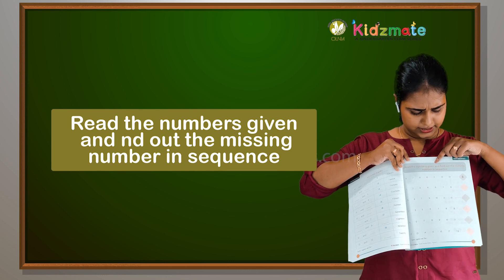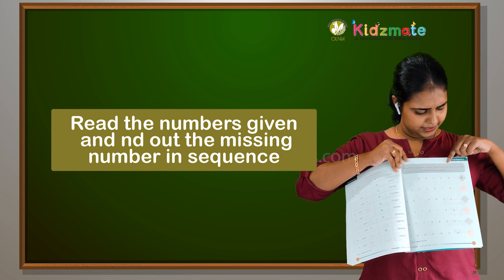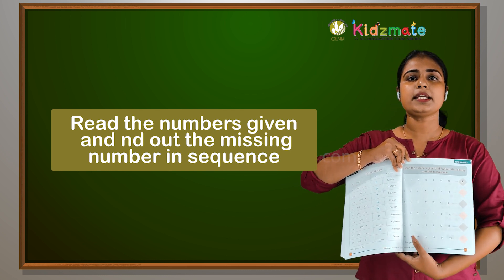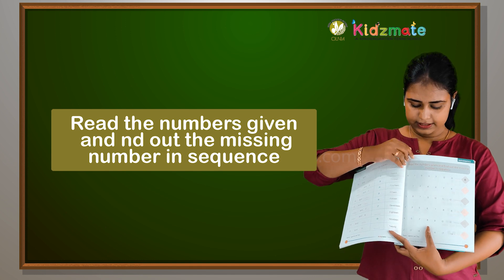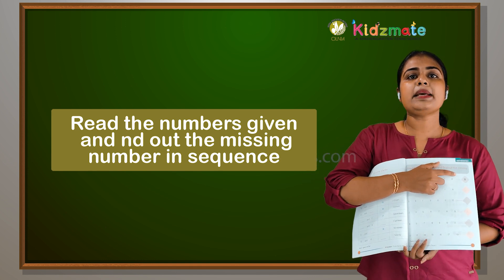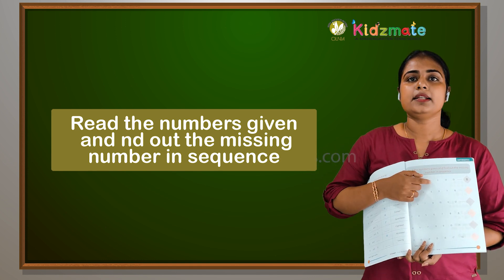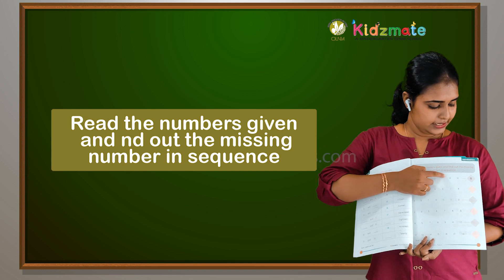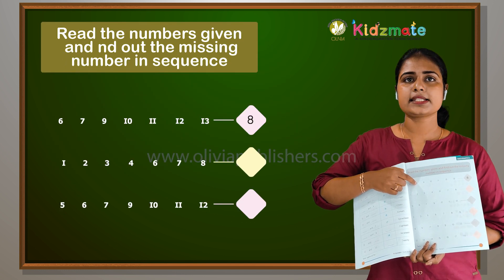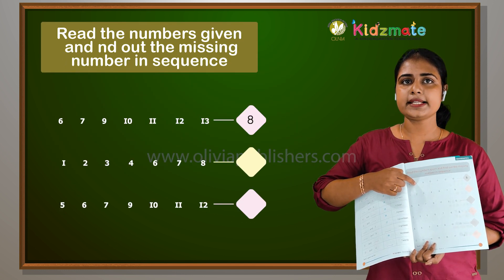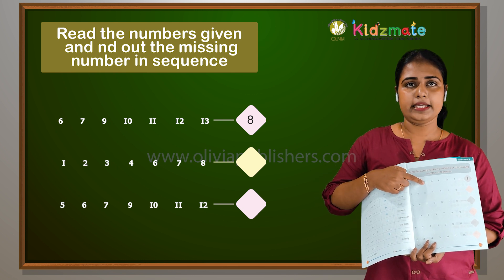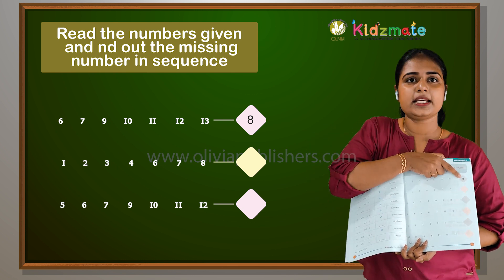Read the numbers given and find out the missing number in the sequence — fifteen. Here are the order numbers, put the missing numbers. Let's take a look at what is done for you. Six, seven — so you have to look at eight now. Nine. What is missing from here?